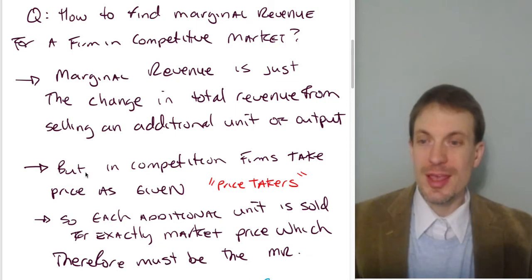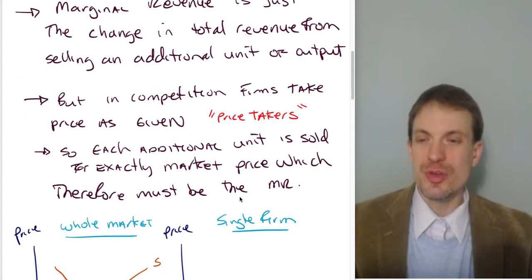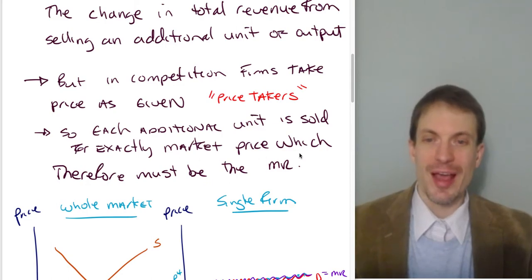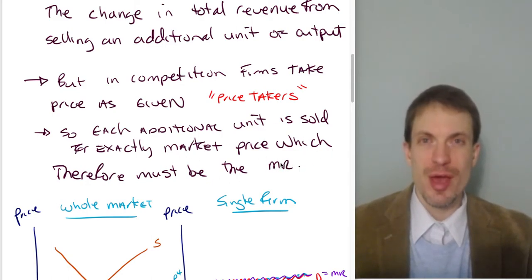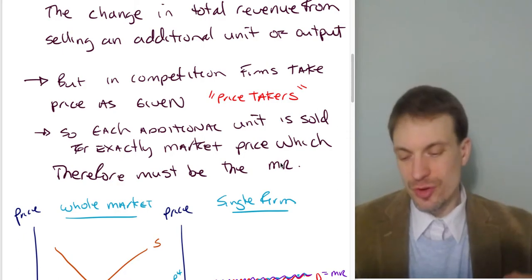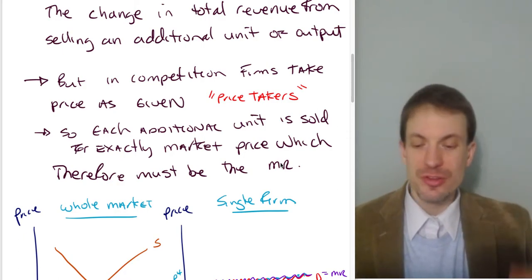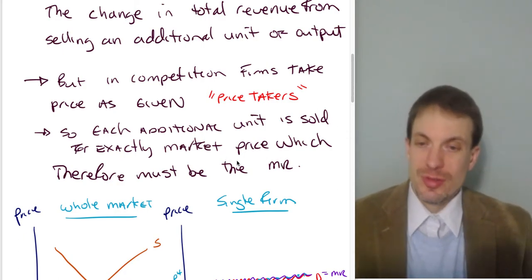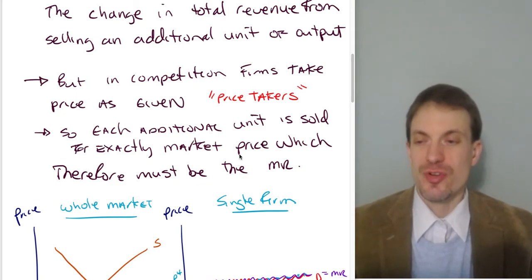So in competition, firms take the prices given—they are price takers. So each additional unit is sold for exactly the market price, which therefore must be the marginal revenue. I sell an additional unit, I contribute that market price to my total revenue. That's exactly our definition of marginal revenue.